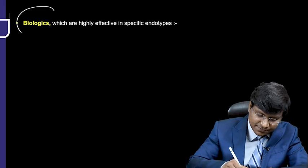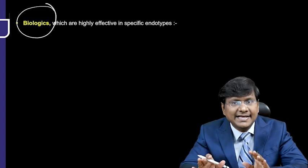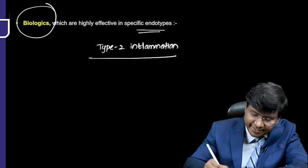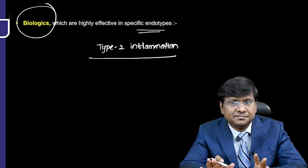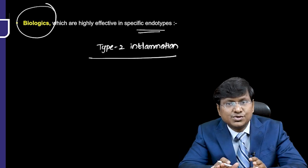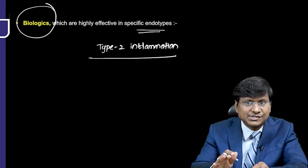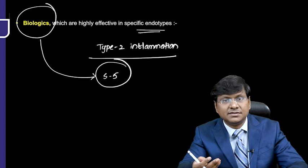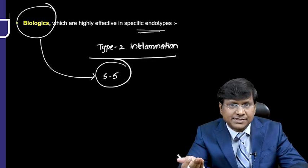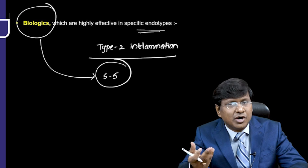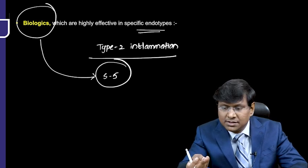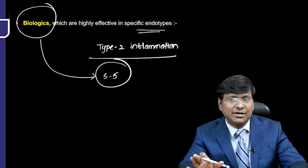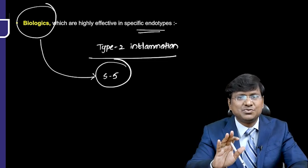Biologics are highly effective in specific endotypes, mainly individuals with type 2 inflammation. They are currently reserved for Step 5 therapy and beyond (Step 6) due to their high cost. These biologics include omalizumab (anti-IgE), anti-interleukin-5 agents, and anti-interleukin-4 antagonists.